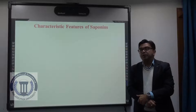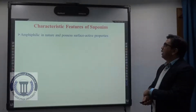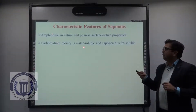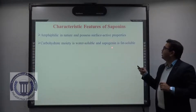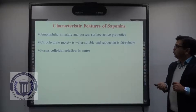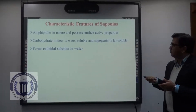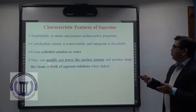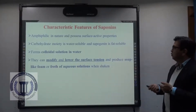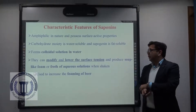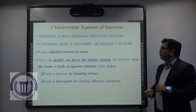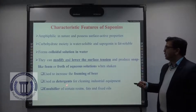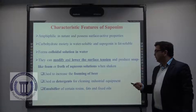Coming to the characteristic features of saponins, they are amphiphilic in nature and possess surface-active properties, meaning the carbohydrate moiety is water soluble whereas the sapogenine, that is the glycon part, is fat soluble. They form colloidal solutions and can modify and lower the surface tension, producing soap-like foam or froth in aqueous solution when shaken. Because of this, they are used to increase the foaming of beer, as detergents for cleaning industrial equipment, and as emulsifiers for certain resins, fats, and fixed oils.